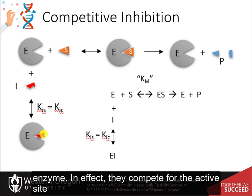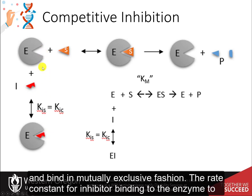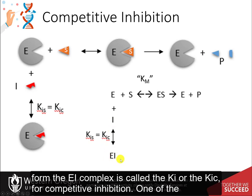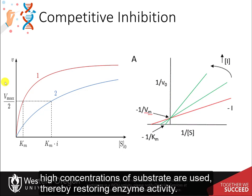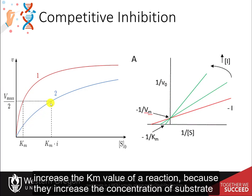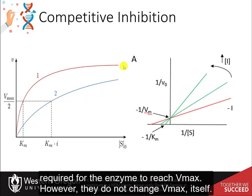Competitive inhibition occurs when substrate and inhibitor both bind to the same site on the enzyme. They compete for the active site and bind in mutually exclusive fashion. The rate constant for inhibitor binding to the enzyme to form the EI complex is called the KI, or KIC for competitive inhibition. One characteristic of competitive inhibitors is that they can be displaced from the active site if high concentrations of substrate are used, thereby restoring enzyme activity. Thus, competitive inhibitors increase the KM value of a reaction because they increase the concentration of substrate required for the enzyme to reach Vmax. However, they do not change Vmax itself.